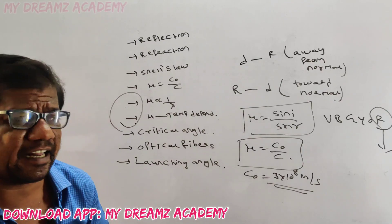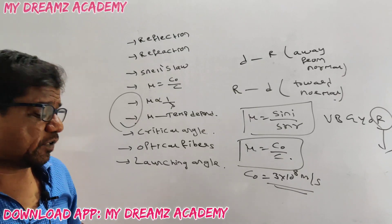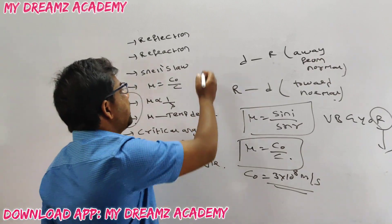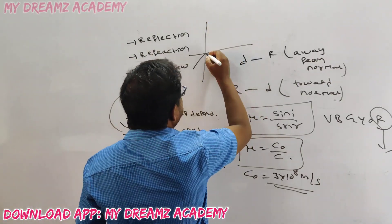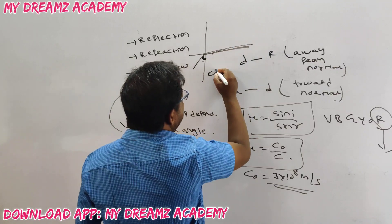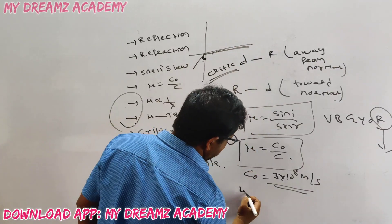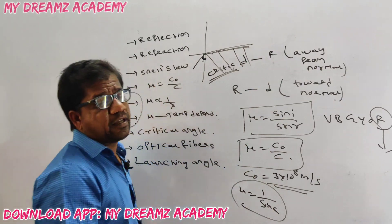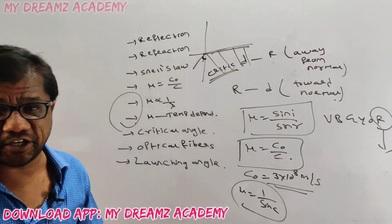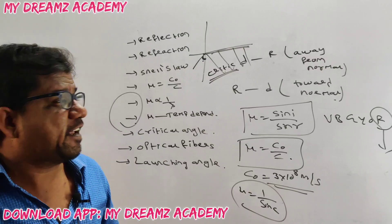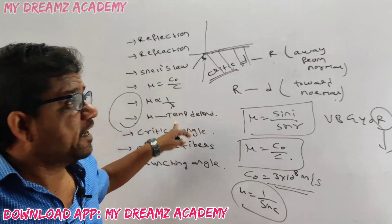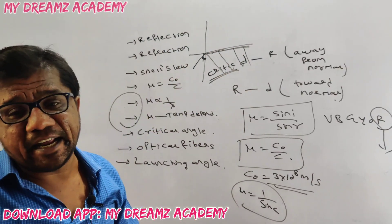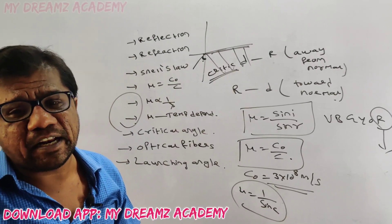Critical angle is an important topic in the syllabus. For a particular angle of incidence, the refracted ray should come back into the same medium — that minimum angle is the critical angle. The formula is: mu equals 1 divided by sin C, where C is the critical angle.